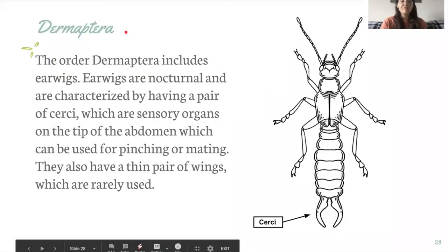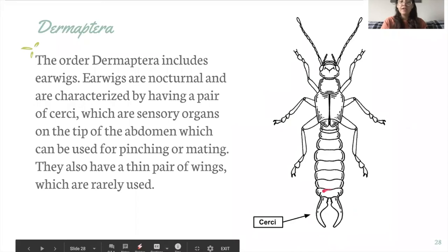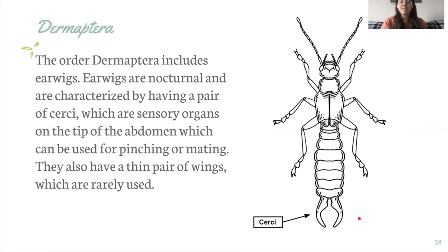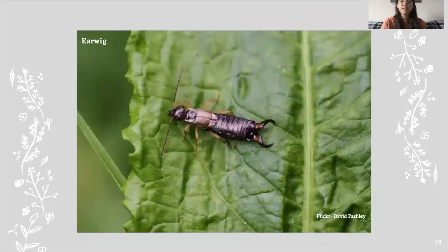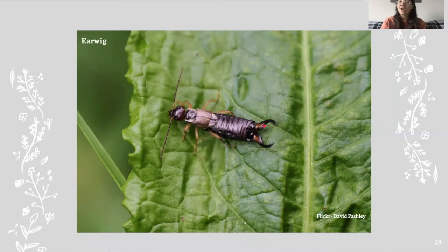Next we have Dermaptera. The order Dermaptera includes earwigs. Earwigs are nocturnal and are characterized by having a pair of cerci, which are sensory organs on the tip of their abdomen. They can be used for pinching or for mating, and earwigs also have a thin pair of wings, however they are rarely used. That's how you'll be able to tell earwigs apart from other insects.